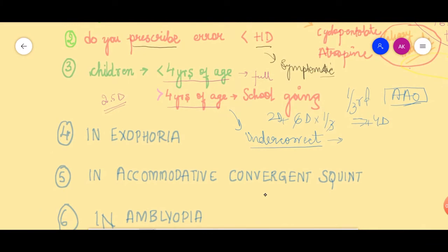Coming to situations where a squint is present — what do we do if a child has exophoria? Exophoria or exodeviation is the outward deviation of the eye. In exophoria, we need these kids to accommodate so that there is a little bit of convergence. But when we give them plus lenses, we are relaxing their accommodation, which leads to worsening of the exophoria. Therefore, whenever a child has exophoria along with hypermetropia, the advice is to under-correct.